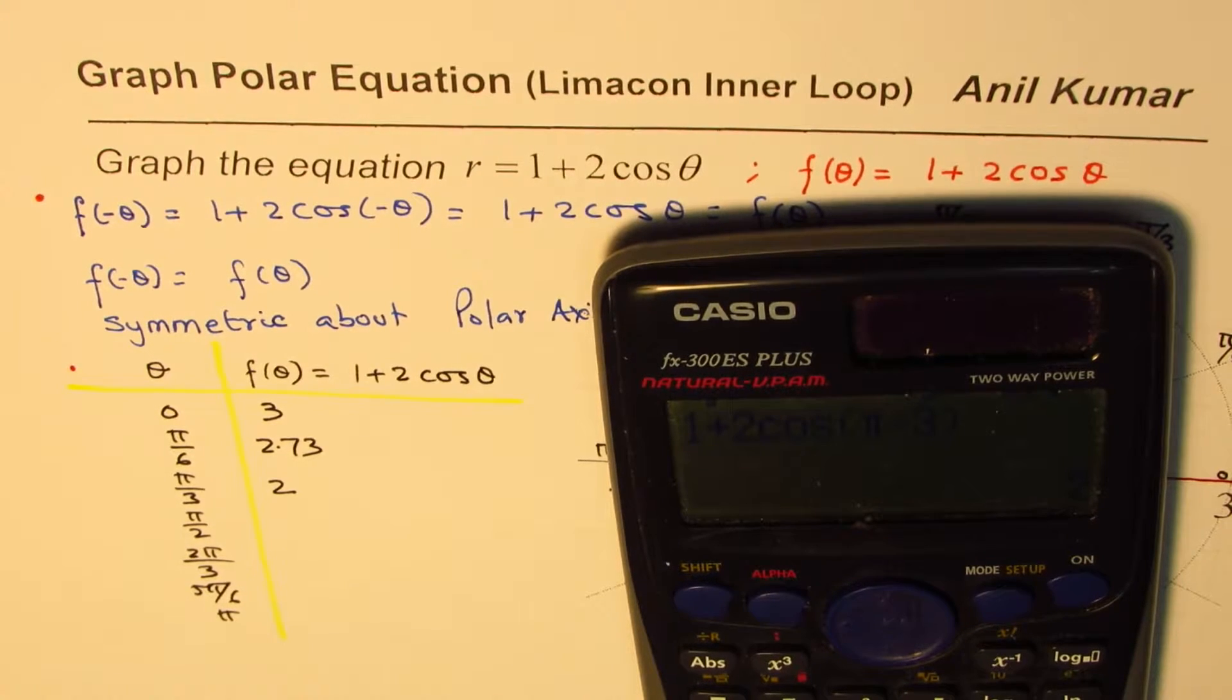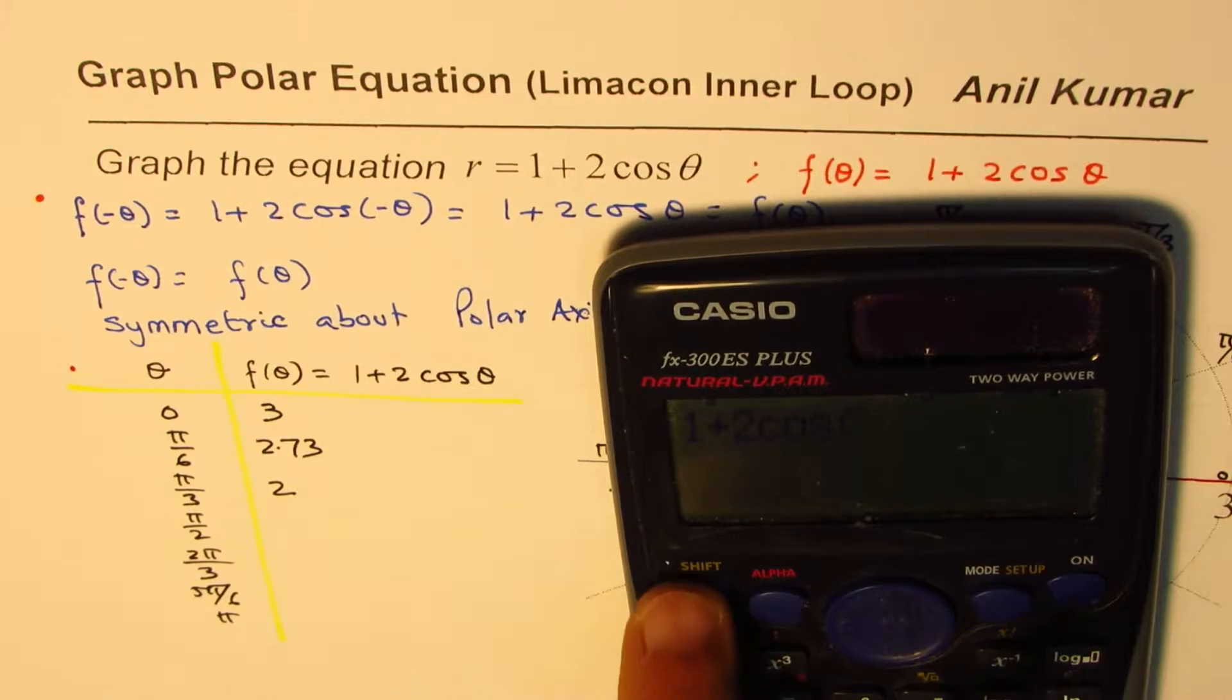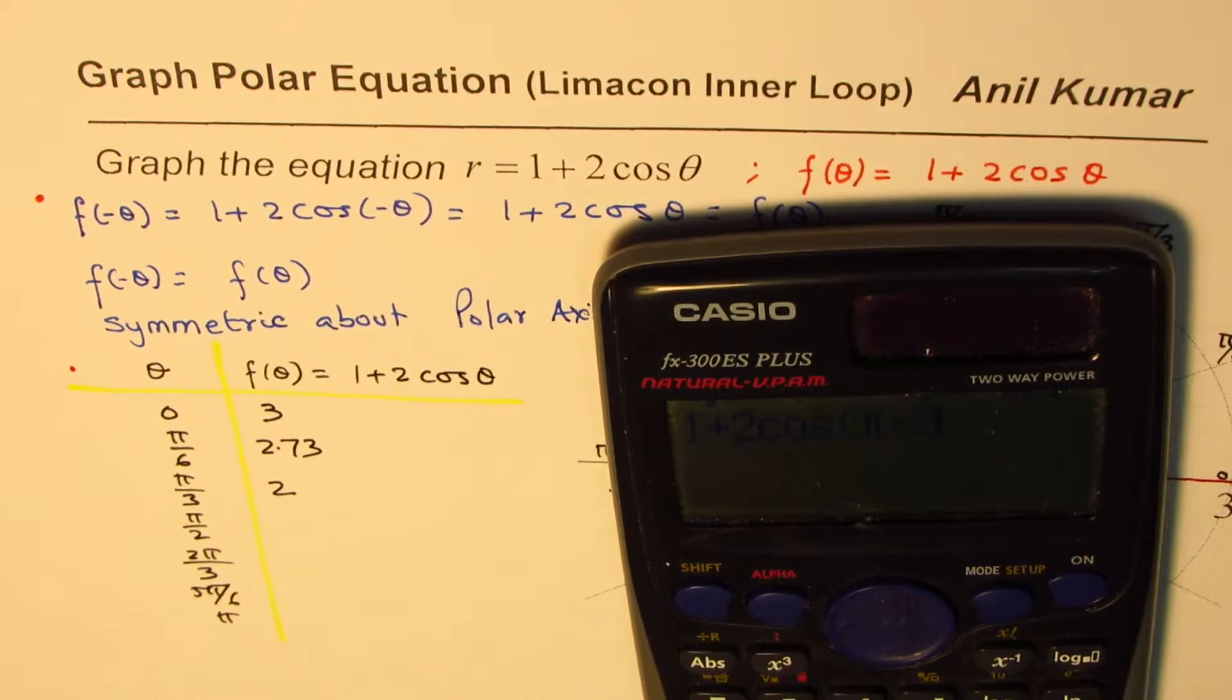And now pi by 2. So 1 plus 2 times cos of pi divided by 2 equals 1. And then 2 pi by 3. So 1 plus 2 times cos of 2 pi by 3. So 2 pi divided by 3 equals 0.